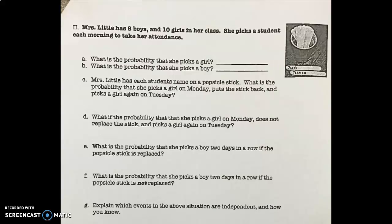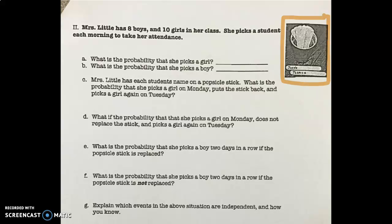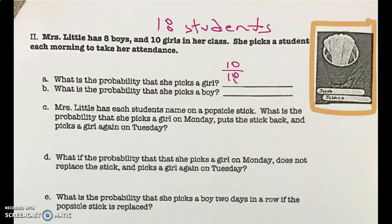Number two: Miss Little has eight boys and ten girls in her class. She picks a student each morning to take attendance. Letter A — what is the probability that she picks a girl? If there are eight boys and ten girls, there are 18 students total. So the probability of picking a girl is ten out of 18. They're both even, divide by two, so it would be five-ninths.